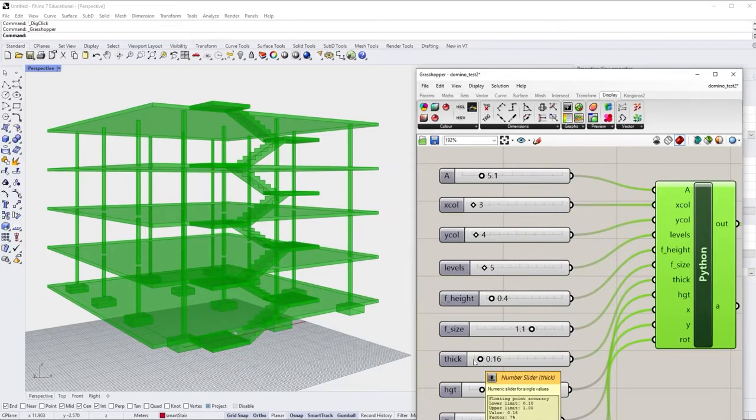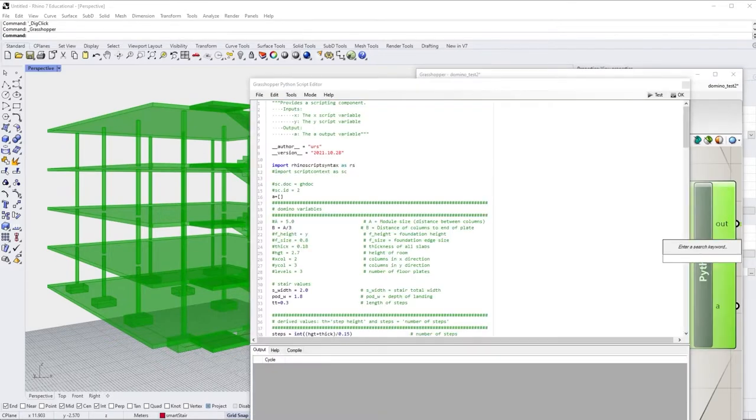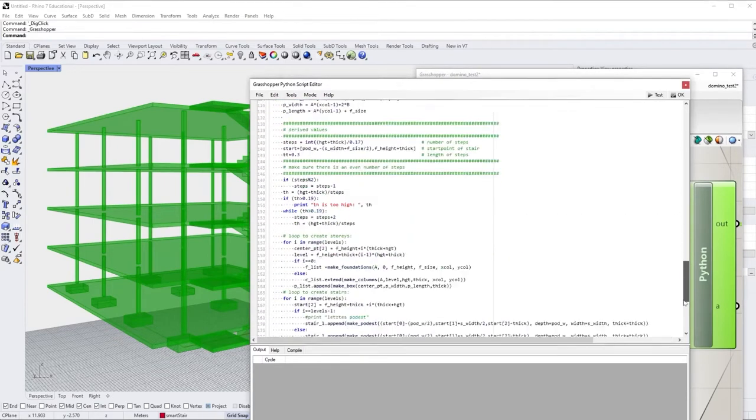They are also regulated in the building code. So it's easy to put this code into computer code and to create a parametric stair model. That's why most architectural design programs or building information modeling programs will have some kind of stair module which allows you to generate a code-compliant stair with just a few clicks.